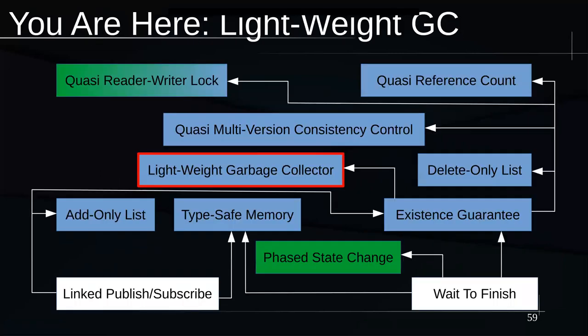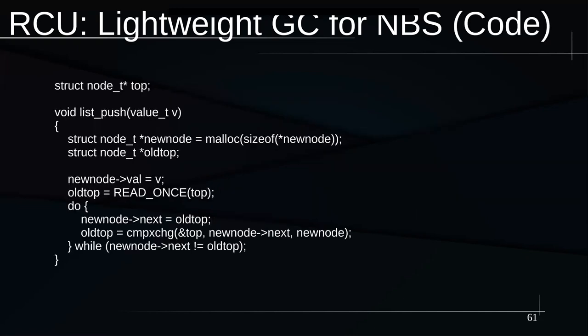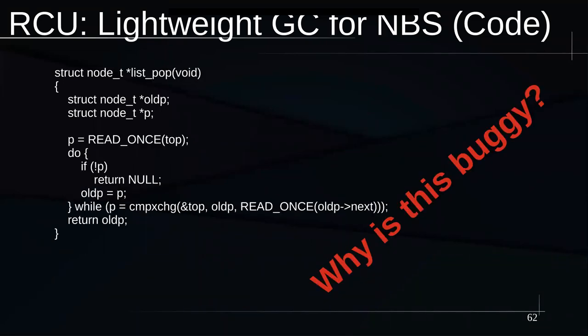Let's take a look at lightweight garbage collection. Non-blocking algorithms are subject to something called ABA. What happens is that reallocated memory can cause failure. An example is an atomic FIFO stack where you push and pop single elements. If you push single elements and pop the whole list all the time, life is good, but that's not always what you want. So this code shows push and pop — but it's buggy.